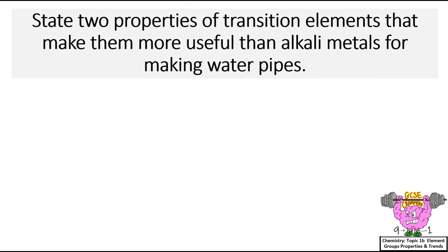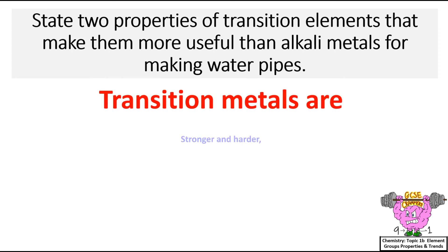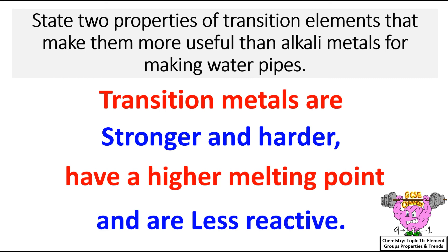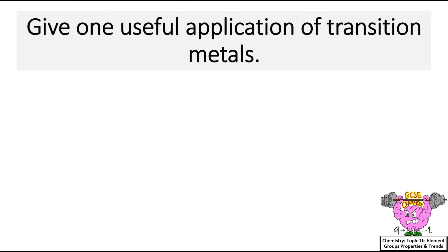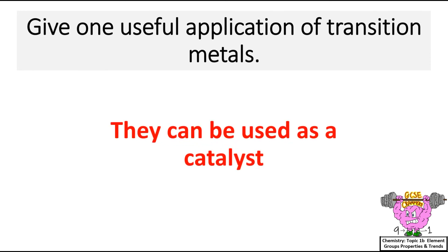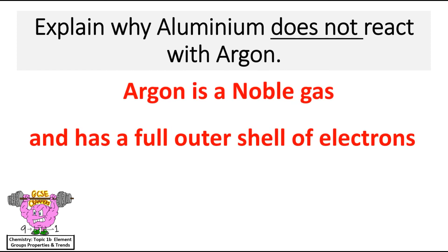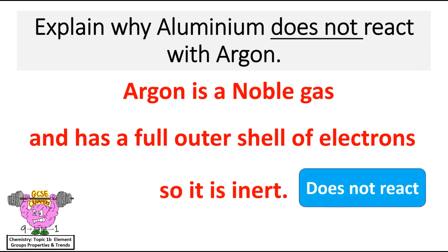State two properties of transition elements that make them more useful than alkali metals for making water pipes. Transition metals are stronger and harder, have a higher melting point, and are less reactive. Give one useful application of transition metals. They can be used as a catalyst. Explain why aluminium does not react with argon. Argon is a noble gas and has a full outer shell of electrons, so it is inert and does not react, because it is stable.